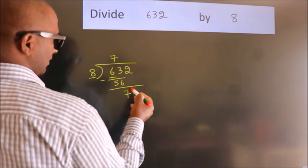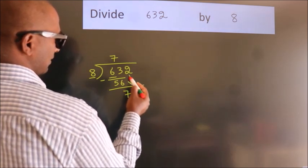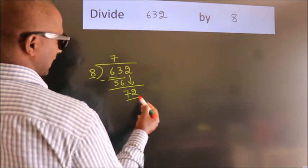After this, bring down the beside number. So, 2 down. So, 72.